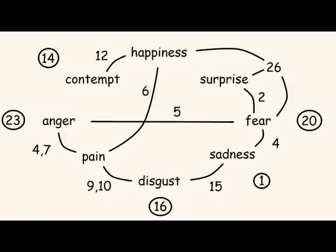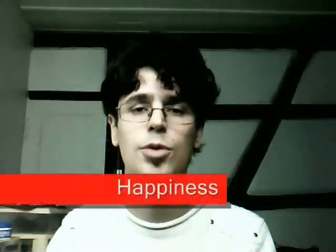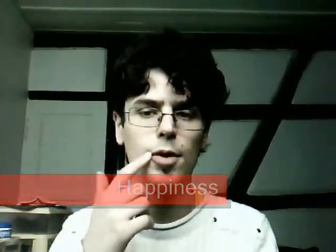It can be surprising that happiness shares number 6 with pain, but number 6 is a quite subtle facial expression — when the cheeks go up and you've got wrinkles around the eyes. Number 12 is when the corners of the lips are pulled. Number 26 is when the mouth is opened, also when you're surprised. Number 6 is difficult to do voluntarily, so it can be used to distinguish between a real smile and a fake smile.